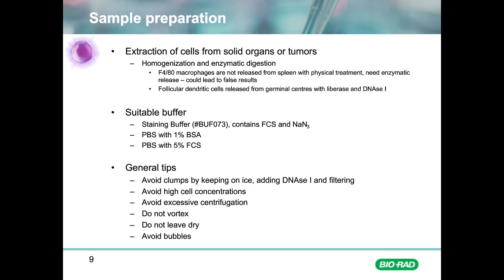When resuspending your cells, a few simple steps can help prevent excessive cell death: avoid vortexing, as this will damage fragile cells; avoid excessive centrifugation and sediment at the lowest speed you can; don't aspirate off your media or off your cell pellet, as cells will die in a dry pellet; and avoid creating bubbles, as surface tension may damage your cells. For more information on sample prep, see our webinar 'Optimize Your Flow Cytometry,' available to watch on demand, and we also have blogs available.